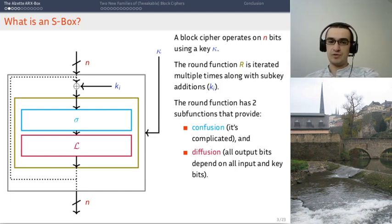The idea of confusion is actually kind of difficult to formalize. It's that the relationship between the output bits, the input bits and key bits has to be complicated. In practice, it means that it has to be highly non-linear. Diffusion is simpler. It's the idea that all output bits need to depend on all key bits and all input bits.